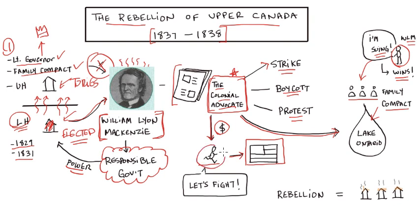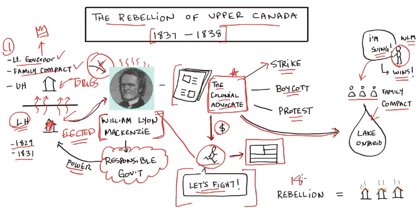This frustrated William Lyon Mackenzie greatly, and he started advocating for armed rebellion. He said, if they're not going to listen to us, if they're just going to try to stop me in any way they can, then let's take up weapons and fight. And so in 1837, a rebellion happens in Upper Canada.